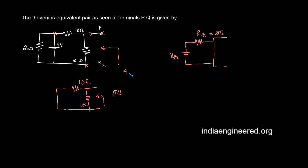That will be 4 into 10 by 10 plus 10, that will obviously be 2 volts because we have equal resistances. The voltage will get divided equally between these two resistances so as expected the value will be 2 volts.